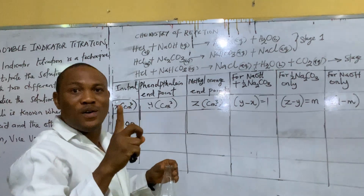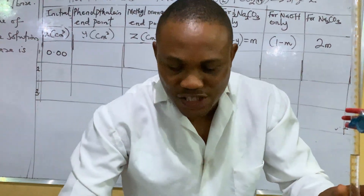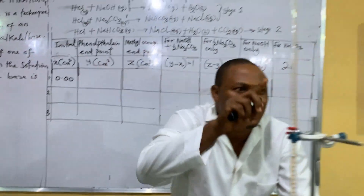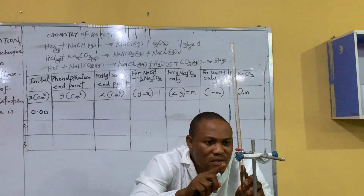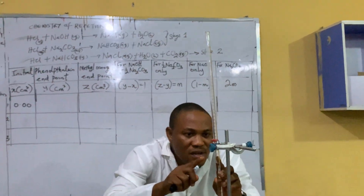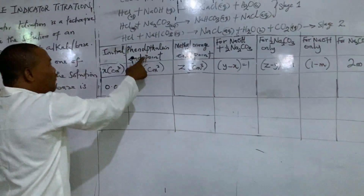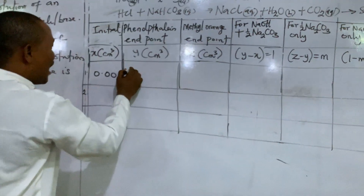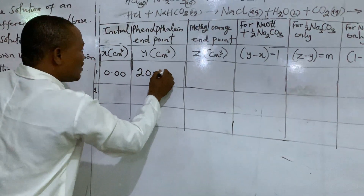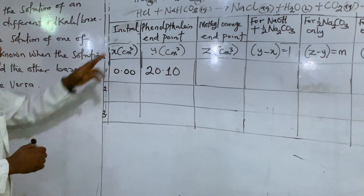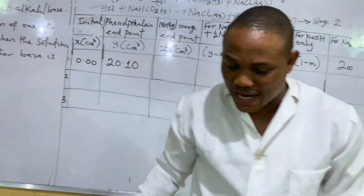I will use another indicator. Half of this is used. Alright, so let me check. 22... 21... okay, 20.17. So at the phenolphthalein endpoint I have 20.17. So at the phenolphthalein endpoint, I have 20.10 — I will continue again from there.